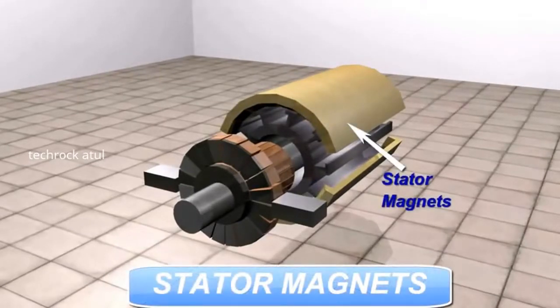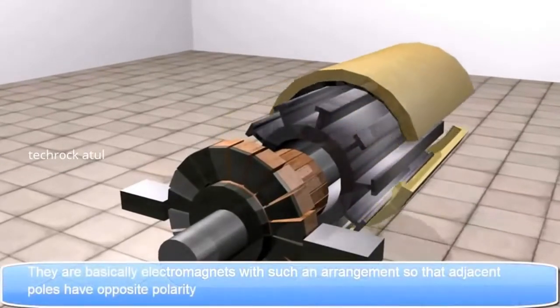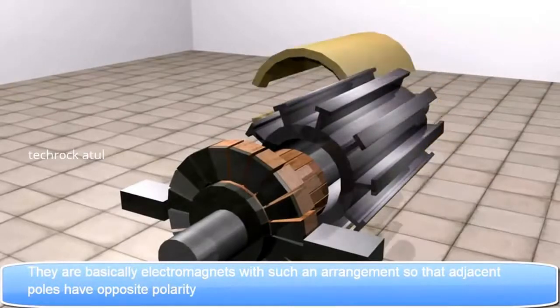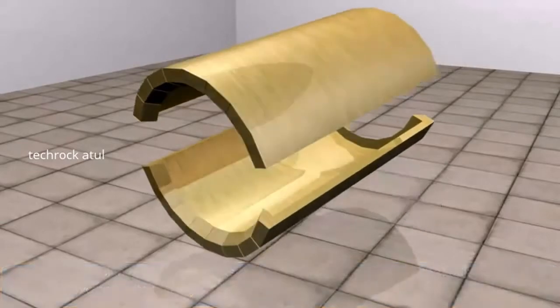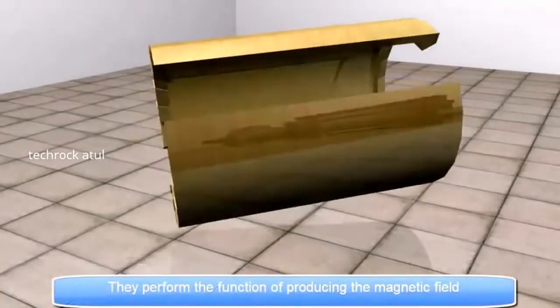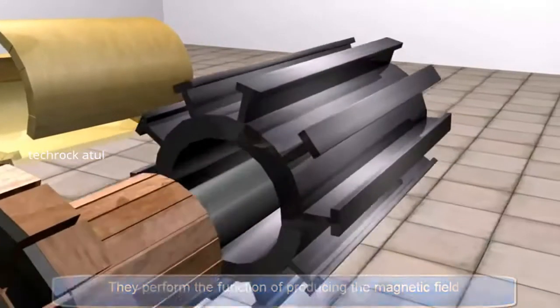Stator Magnets. They are basically electromagnets with such an arrangement so that adjacent poles have opposite polarity. They perform the function of producing the magnetic field.